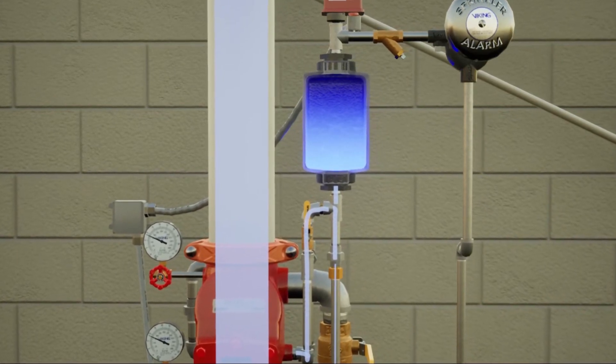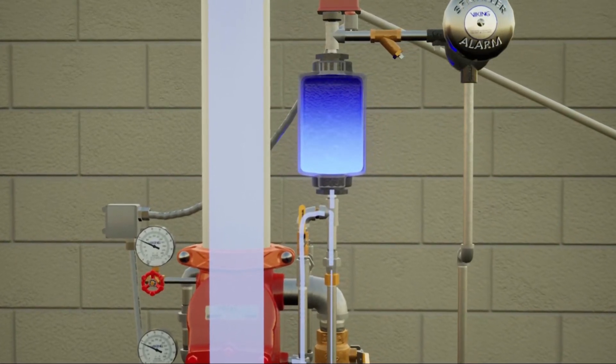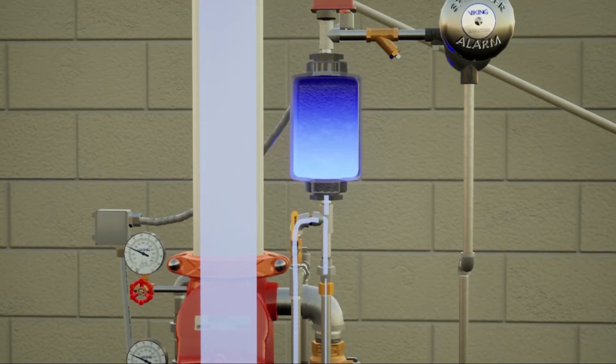The alarm line is equipped with a 1-8 restricted orifice that allows the retard chamber to externally drain and reduces false alarms.